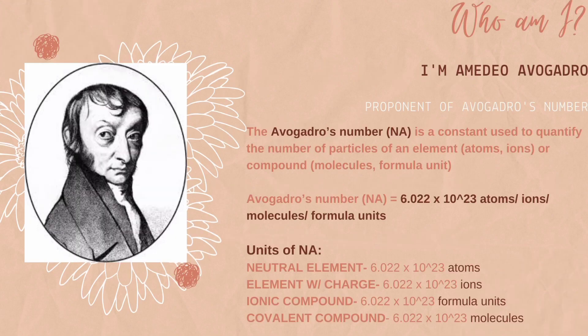This picture shows the one who first quantified the amount of particles of a particular element, which is Amadeo Avogadro. Amadeo Avogadro came up with a specific number of particles equal to 6.022 times 10 raised to 23 atoms, ions, or molecules.